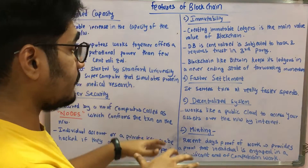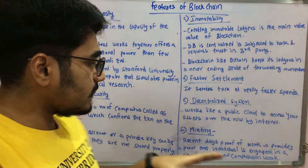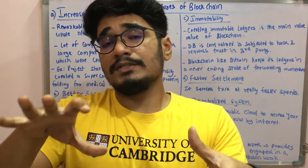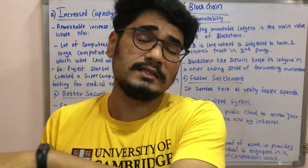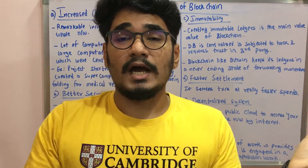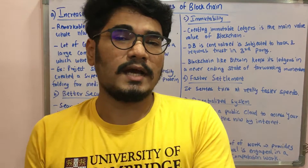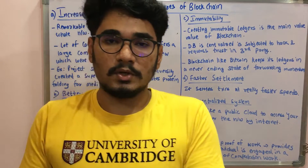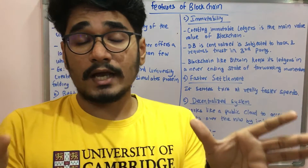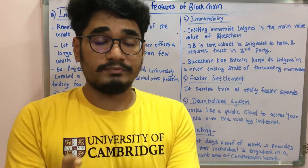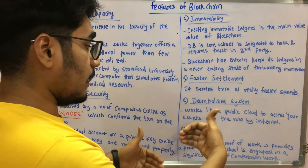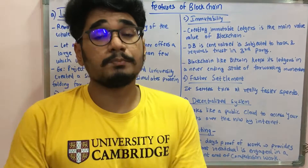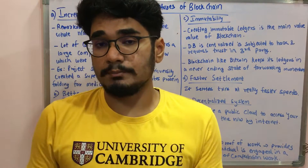The final feature involves the proof of work concept. In the current world, entities like Google and Facebook have the funds and power to run this technology at a high level, but blockchain is largely not present in other parts of the world where such infrastructure is lacking. Proof of work addresses this — it provides proof that an individual somewhere in the world is using computational power and is engaged in solving a block. A significant amount of computational effort is required to solve that block.